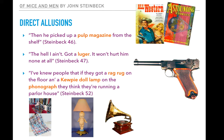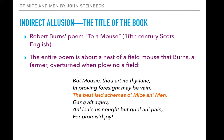There are also indirect allusions. In this particular novel, the title of the book is an indirect allusion to a poem by Robert Burns called 'To a Mouse.' It was written in 18th century Scots English, so it's a little bit of a tough poem to read. The entire poem is about a nest of a field mouse that Burns, a farmer, overturned when plowing a field. This is just the last stanza.